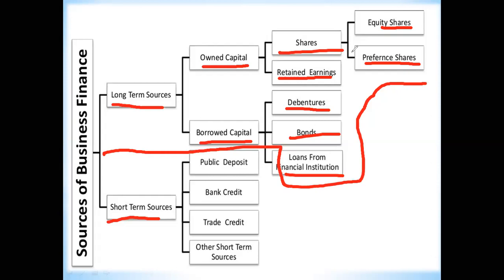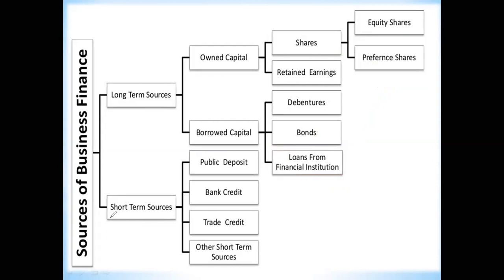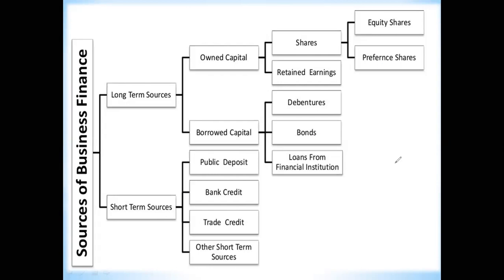Short-term sources are divided into four parts: number one, Public Deposits (PDs); number two, Bank Credit; number three, Trade Credits; and number four, Other Short-term Sources. We will be learning in detail about all these sources in the coming videos. The entire diagram covers what we will study in detail in this chapter.